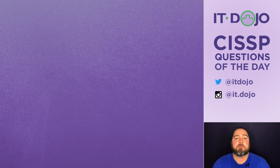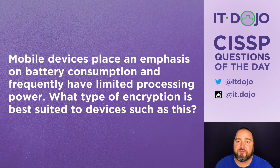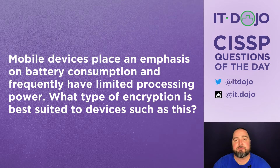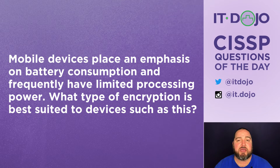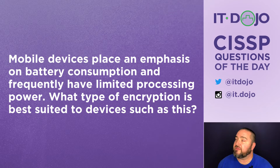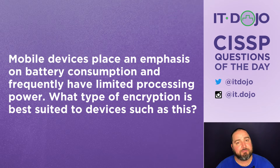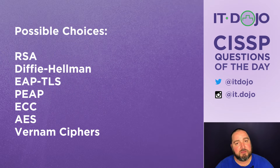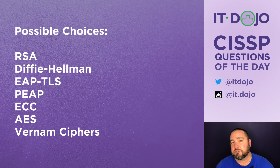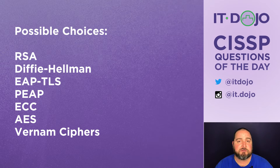Question number one comes from the world of cryptography. When dealing with mobile devices, they tend to place an emphasis on battery consumption and also tend to have reduced processing power. Given that situation, which of the following encryption techniques would be most appropriate to implement? Go ahead and give those a look, think about the best answer choice from the options presented, and click pause if you need to.